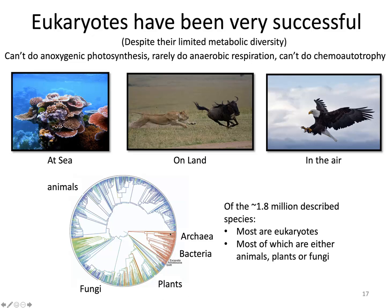However, this could reflect a bias in what we're able to describe, because most described species are ones we can easily see with our eyes. Archaea and bacteria, being microscopic, are much more difficult to describe as species, which could be one reason the described species are dominated by multicellular organisms.